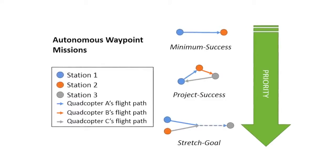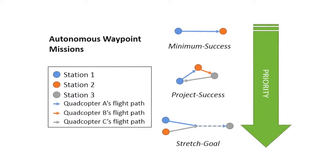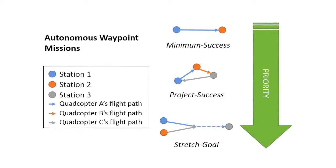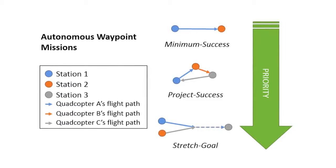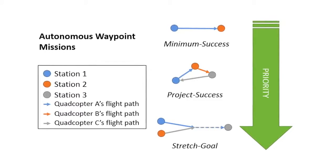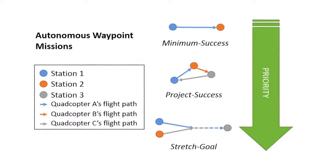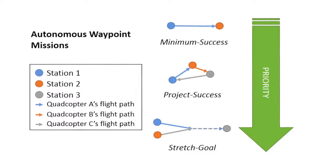Three waypoint missions were selected in order of importance. A minimum success mission involves a single quadcopter autonomously flying from station one to station two. A project success encompasses multiple quadcopters flying between separate stations in sequence. Finally, a stretch goal mission involves a corridor operation where two quadcopters from separate stations rendezvous in mid-air and fly and land into a shared destination.